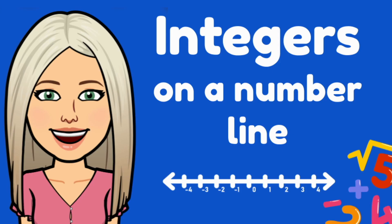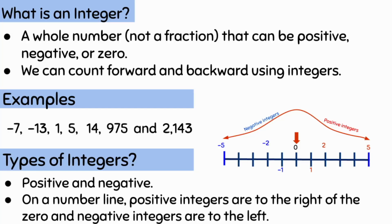Integers on a number line. Integers are whole numbers that can be either positive or negative and they have no fractional parts. No decimals and no fractions.